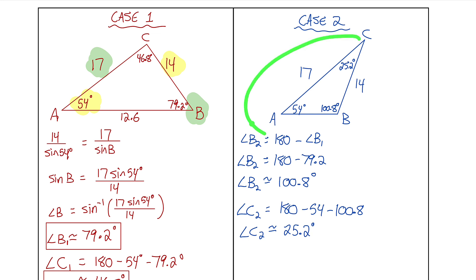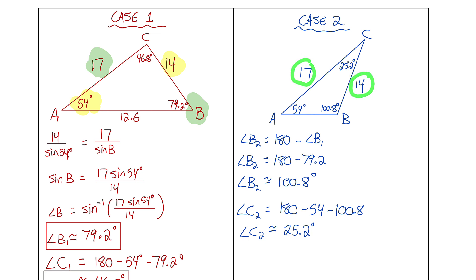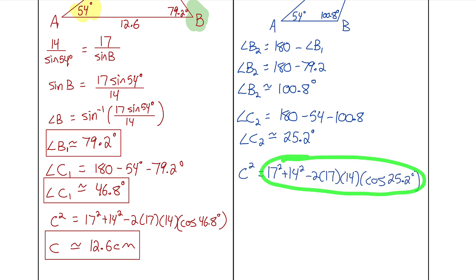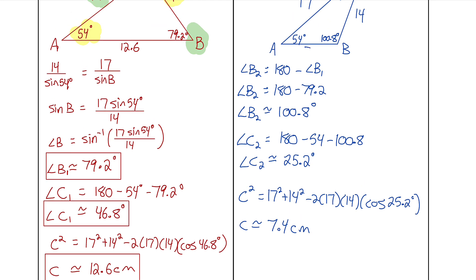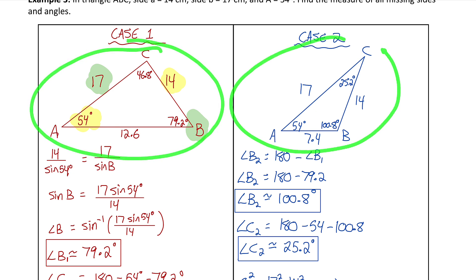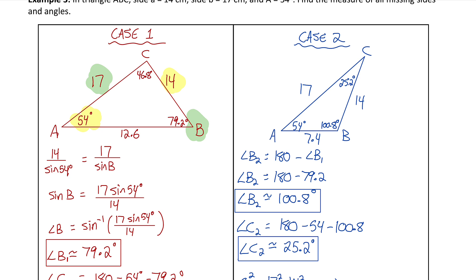For case two, I still need side C. Using cosine law: C squared equals 17 squared plus 14 squared minus 2 times 17 times 14 times cosine of 25.2 degrees. After evaluating and square-rooting, side C is approximately 7.4 centimeters. Now both possible triangles are fully solved. We wouldn't know which of the two triangles is the correct answer — that's why we call it the ambiguous case of sine. The triangle could have all of those dimensions or all of these dimensions. Hopefully now you understand when to use the ambiguous case of sine and how to apply it.